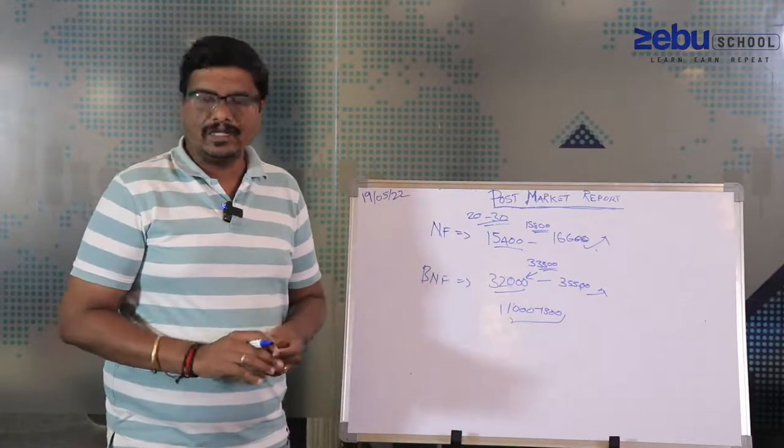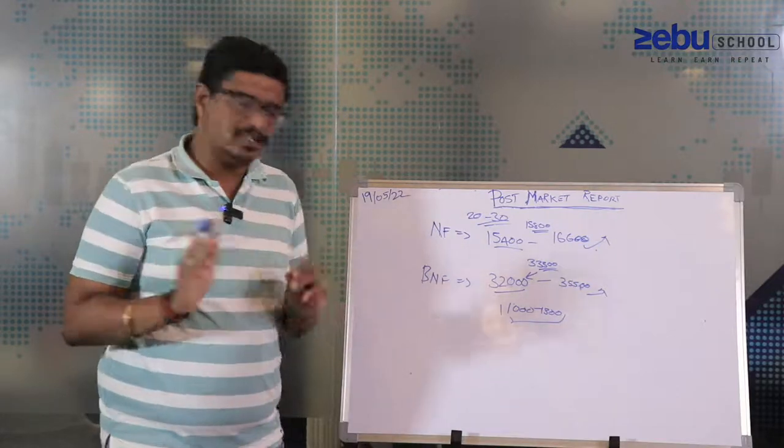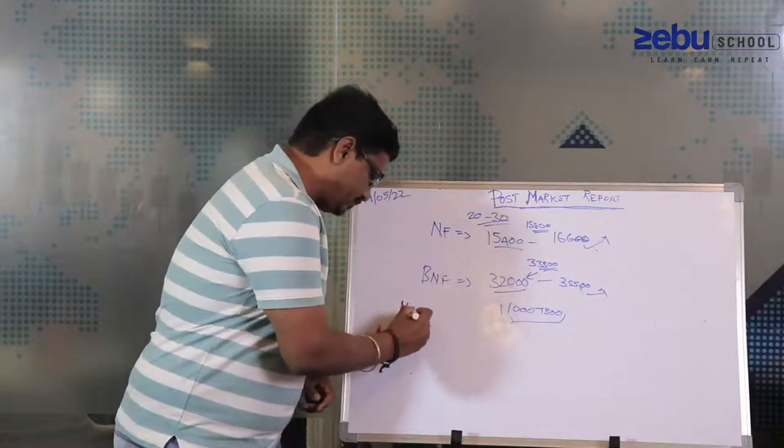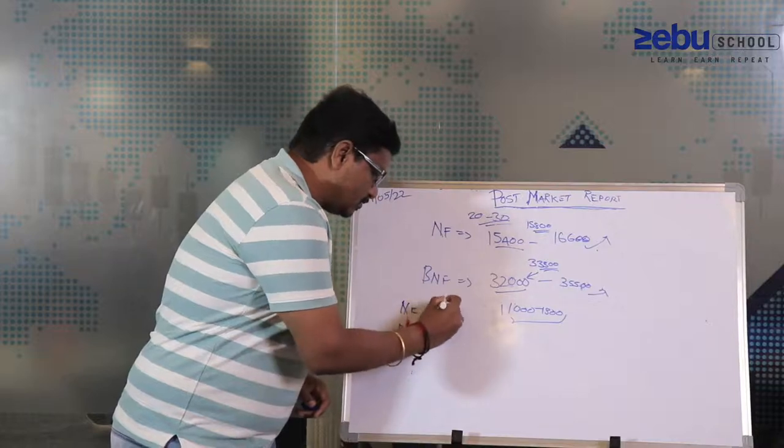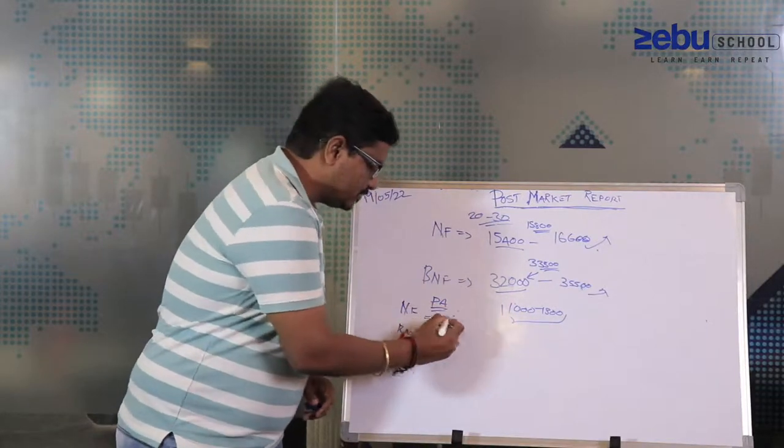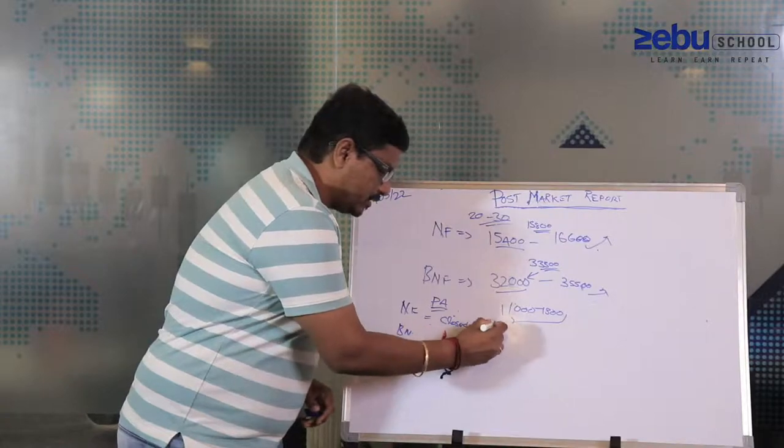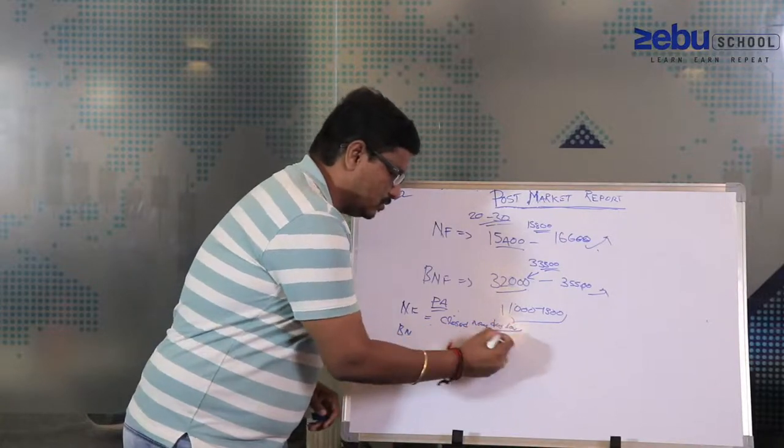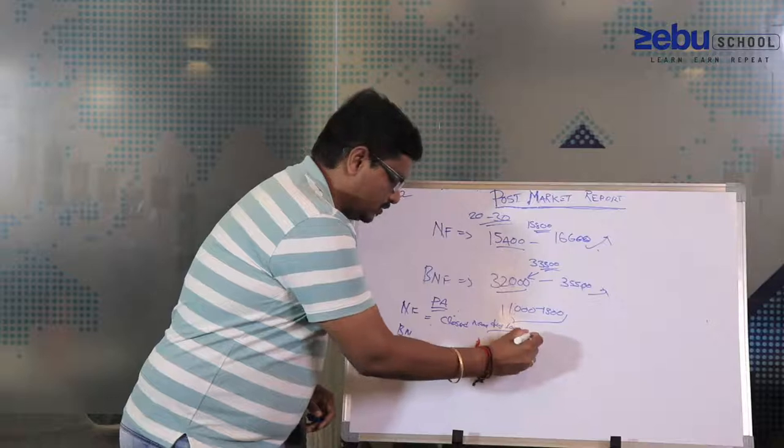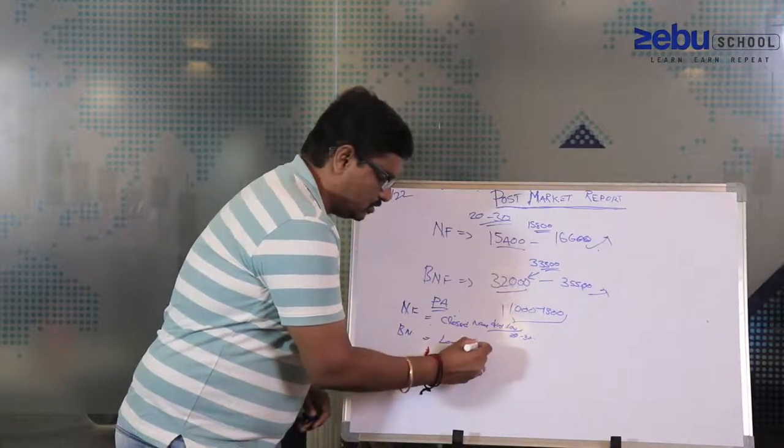For the day, if you look at how Nifty and Bank Nifty performed in terms of price action, Nifty closed almost near day's low, 20 to 30 points is the day low. This is also a low close.